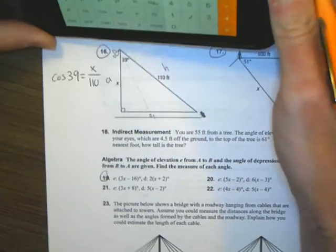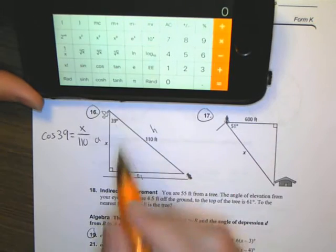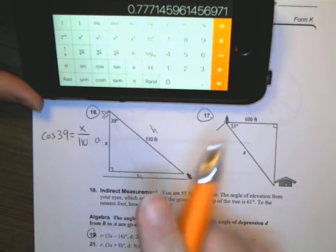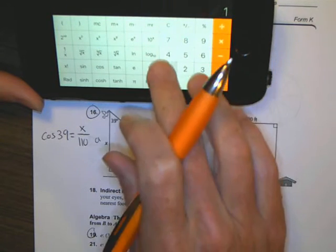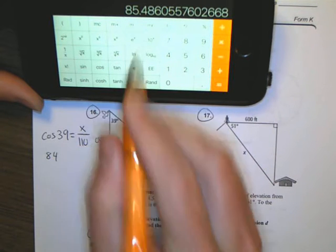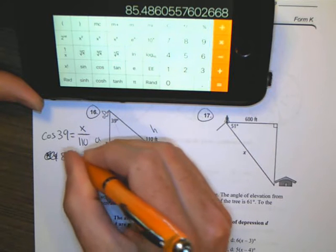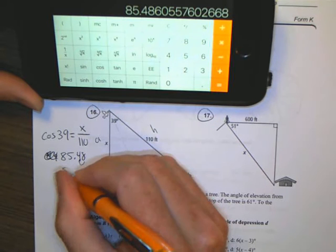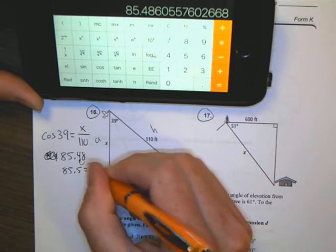To solve this one again, I'm going to find out the cosine of 39. 39 cosine. I'm going to cross multiply that with 110 times 110. And that's going to equal 85.48. And if I want the nearest tenth, I'm going to round that up to 85.5, going to be equal to X for number 16.